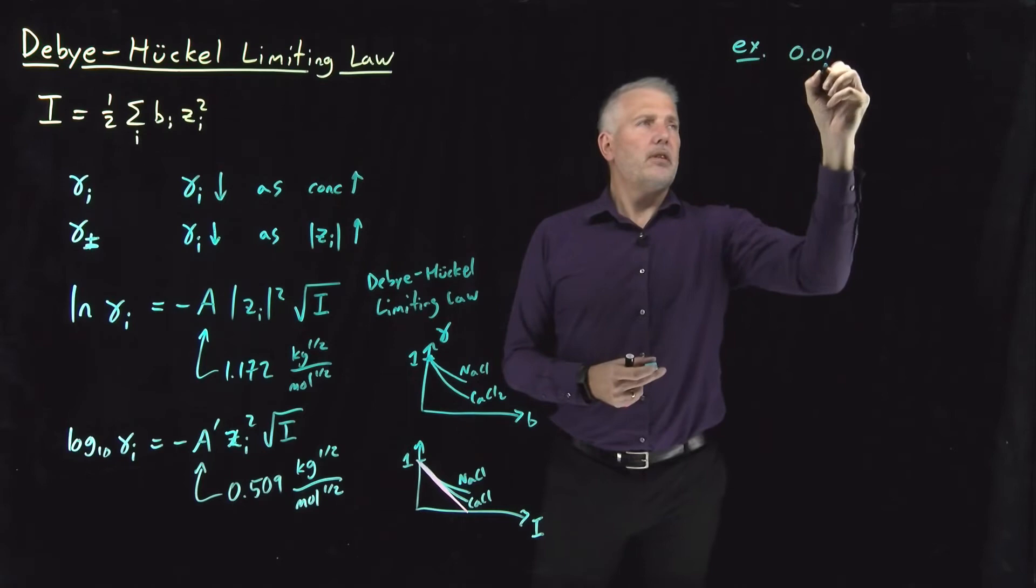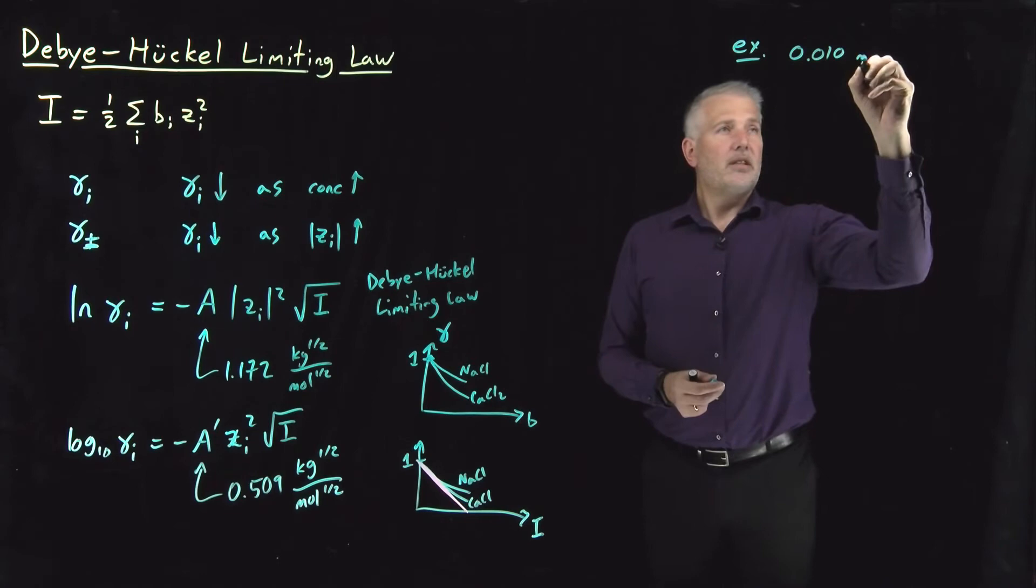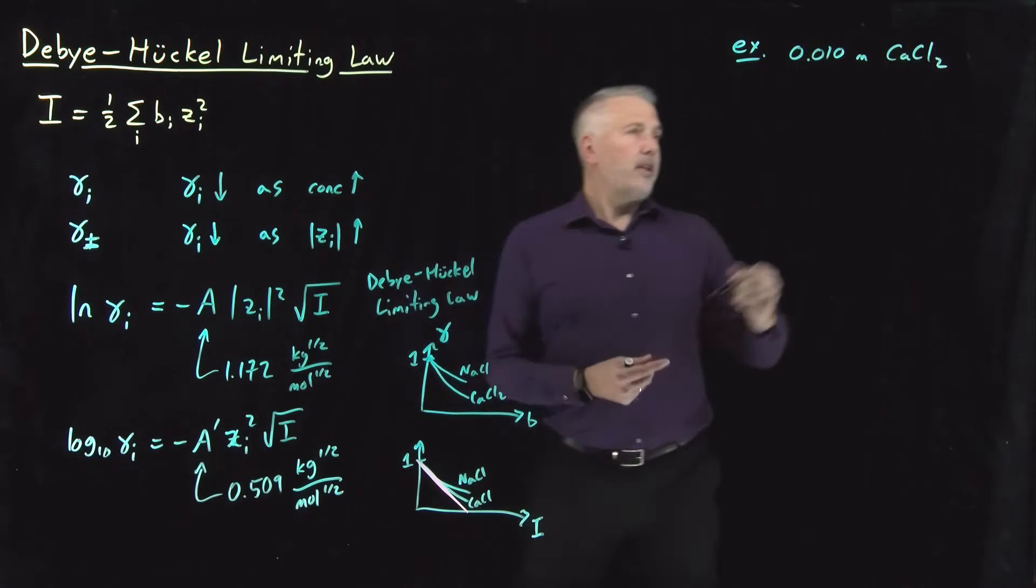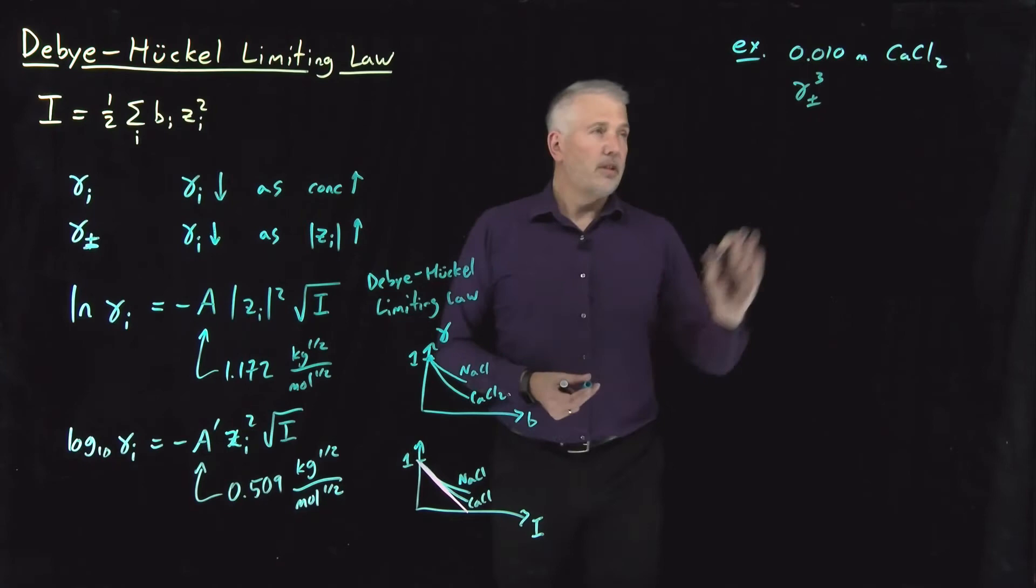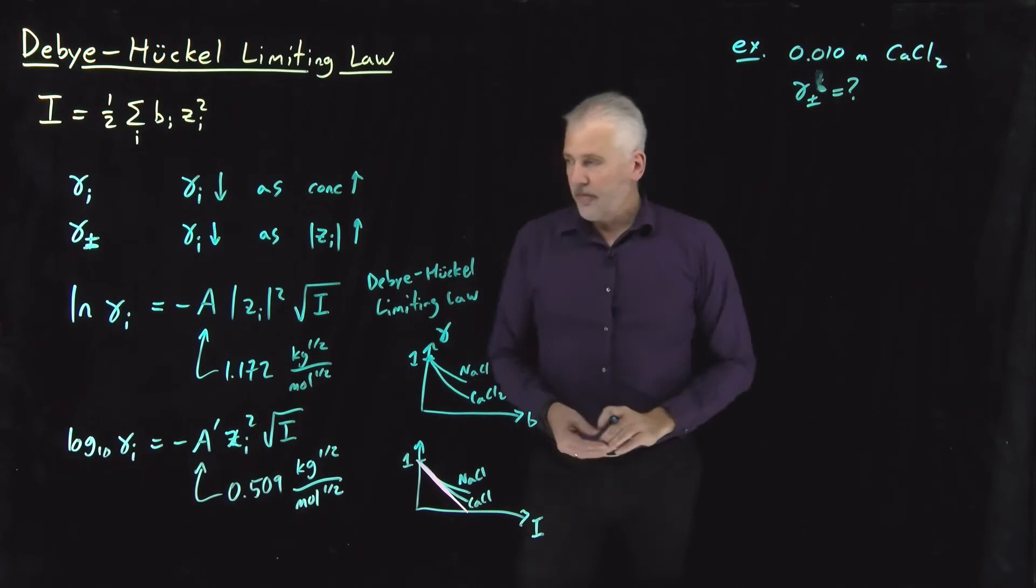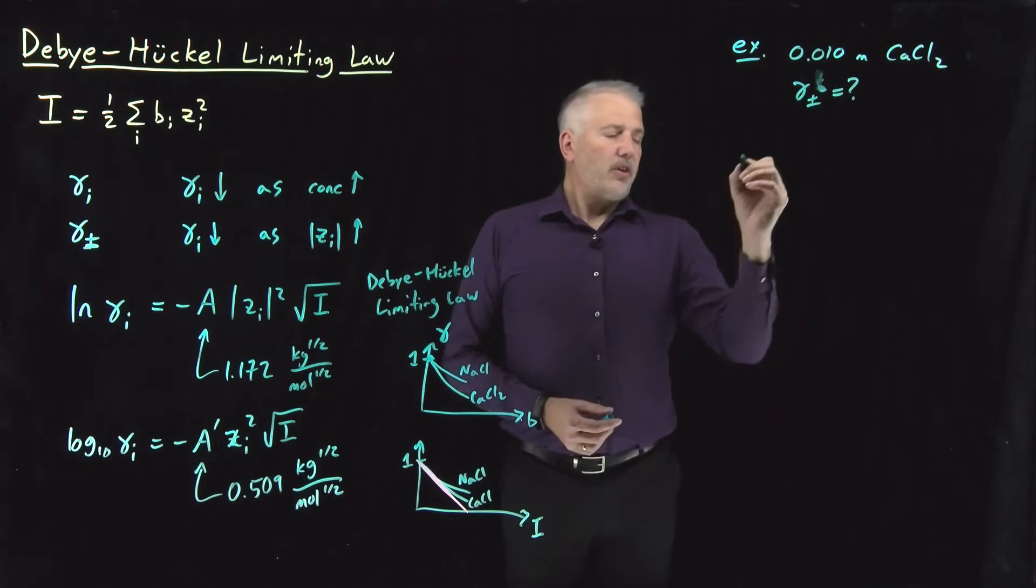Let's say we have a 0.01 molal calcium chloride solution. Now using nothing other than the concentration, we can use the Debye-Huckel limiting law to predict what is going to be the activity coefficient, the mean ionic activity coefficient of that system as a way of predicting how ideally or not ideally it should behave. So we'll do that step by step. First, we can do it for each one of the individual ions in the solution.